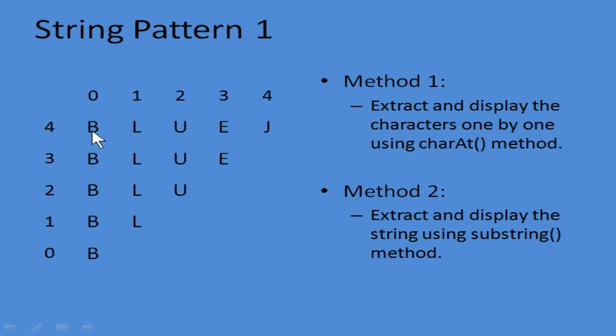You can see the first row has the full string — 'BlueJ' is displayed. The second row shows 'Blue' — J is missing. Then you can see BLU in the third row, then BL, then B. So you can notice it is a decreasing pattern — it is a decreasing triangle.